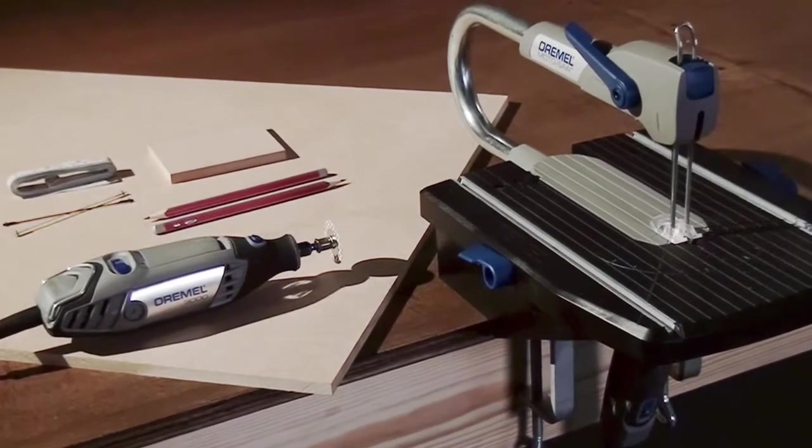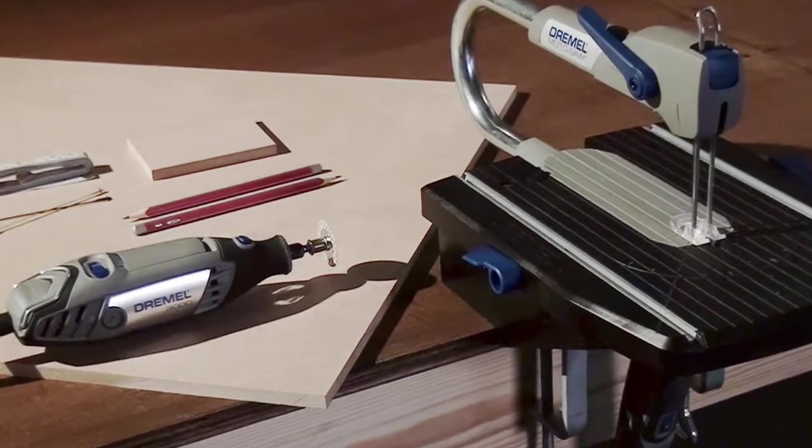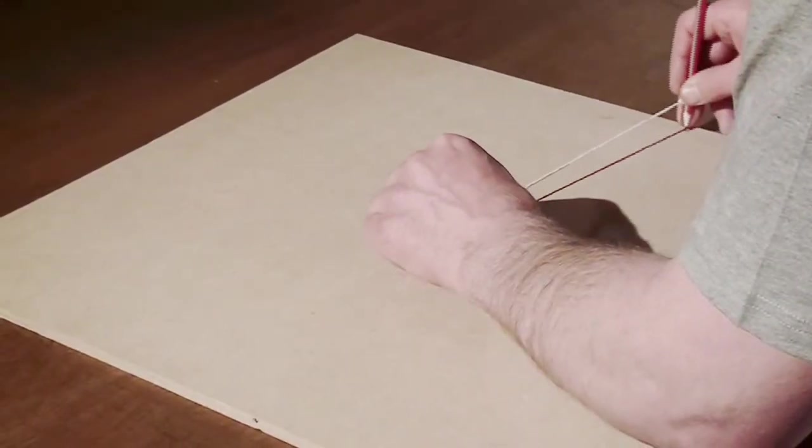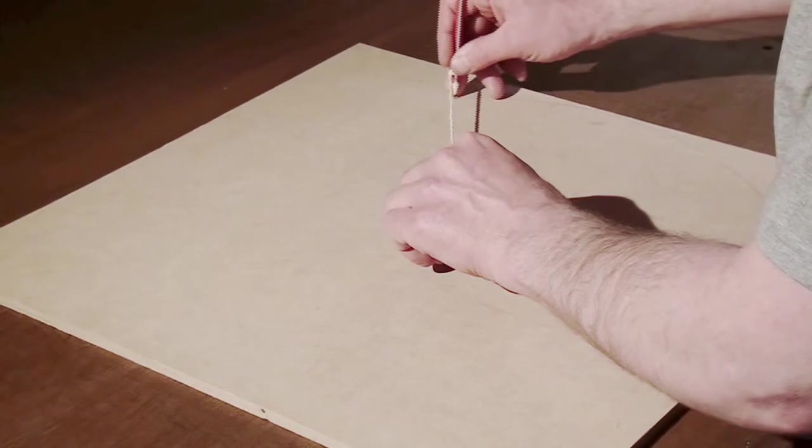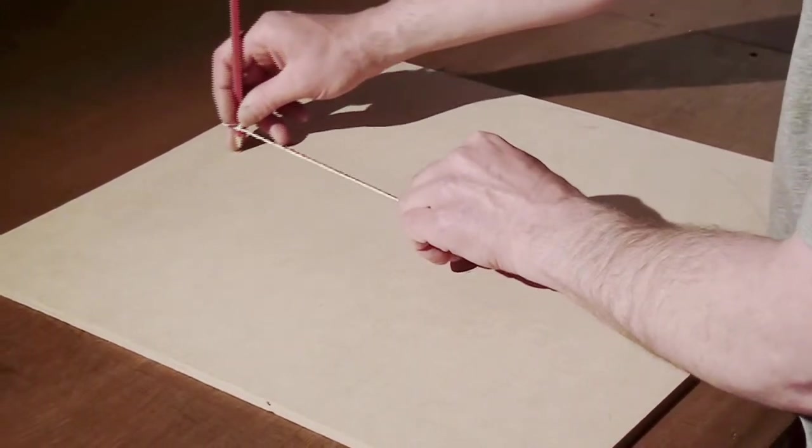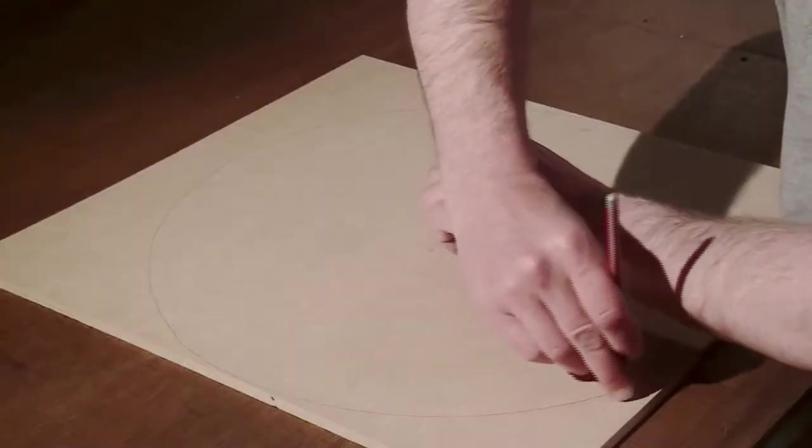Buy a piece of MDF and get it cut for you by your local DIY store, so that it is exactly 55cm by 50cm. When you get it home, draw a circle with a diameter of 50cm onto it. This will become the outline for your coiled snake jigsaw.